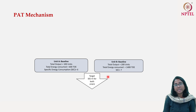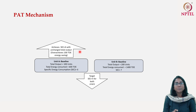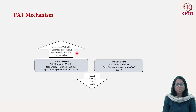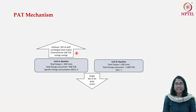They do not have to reduce their total production, since we are talking about intensity. Suppose Unit A makes efforts and not only achieves the target but over-achieves it — instead of SEC of 5, it reaches an SEC of 4. With total output unchanged at 100 units and SEC now 4, the total energy requirement is 400 tons of oil equivalent. The target had been 500 tons of oil equivalent, but Unit A has reduced further, over-achieving 100 tons of oil equivalent in energy savings.